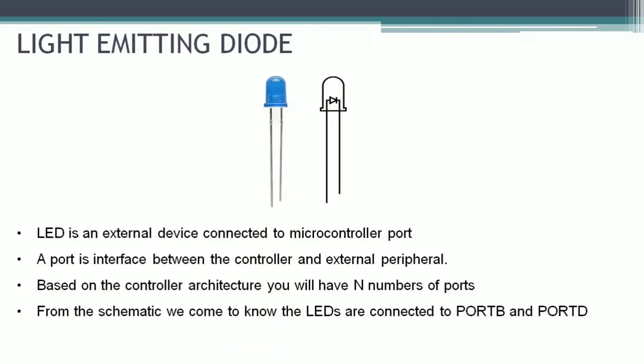Moving on, the first peripheral is the LED — the Light Emitting Diode. The longer side is called the anode and the shorter side is called the cathode. LEDs are external devices connected to the microcontroller port, acting as an interface between the controller and external peripherals. Based on the controller architecture you will have a number of ports. From the schematic, we can see that LEDs are connected to Port B and Port D on this board.